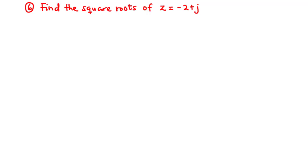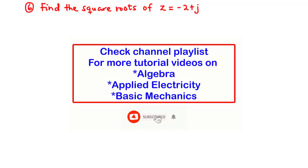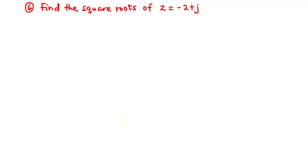Hello and welcome back to this channel. In today's video we are going to learn how to find the square roots and cubic roots of complex numbers. If you are new here make sure you subscribe, like, and share this video. Without wasting much time, let's start off with question number six: find the square roots of z equals negative two plus j.